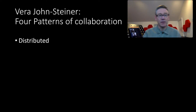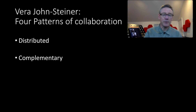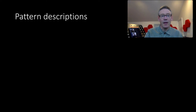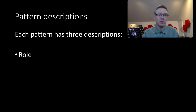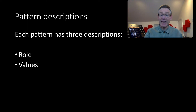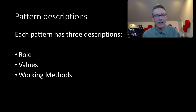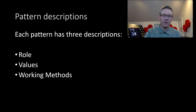So here are the four types: Distributed, Complementary, Family, and Integrative. Each is described in terms of the role — a role title that describes what the role is — then the values of the collaborative group, what it is they share, and how they go about doing the collaboration. So by identifying the role, the values, and the method, we get a good picture quite quickly of these various different modes in which collaboration occurs.